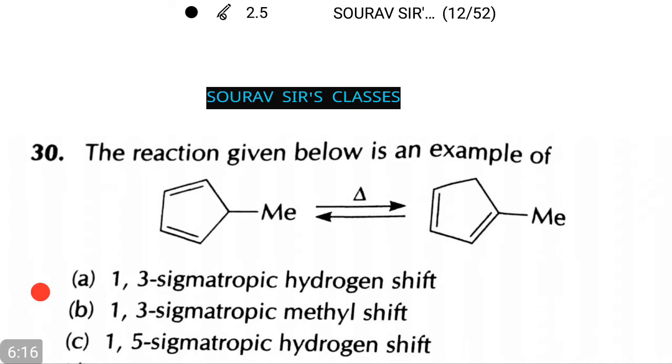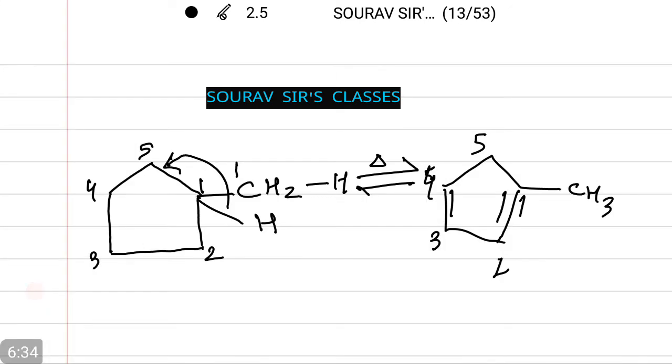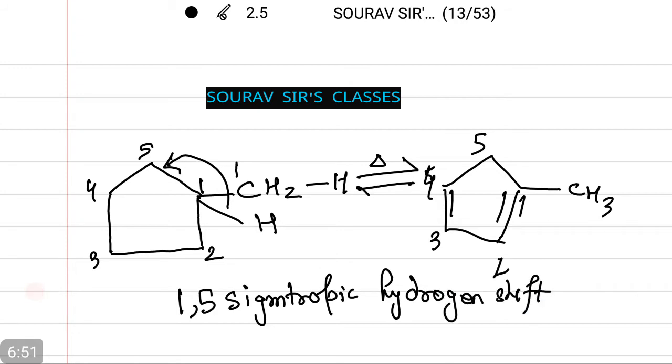Now, in the next question we have a reaction given below as an example. We have to write what kind of hydrogen shift does this equation have. Let's see what the equation will look like when there is a hydrogen shift. This is what the reaction looks like. This is a classic example of 1,5 sigmatropic hydrogen shift. Thus this corresponds with option number C from our question.